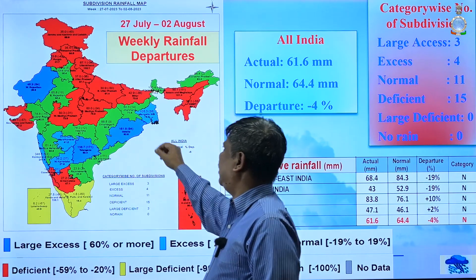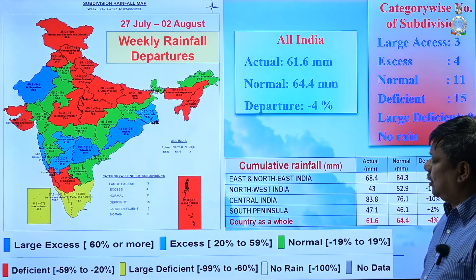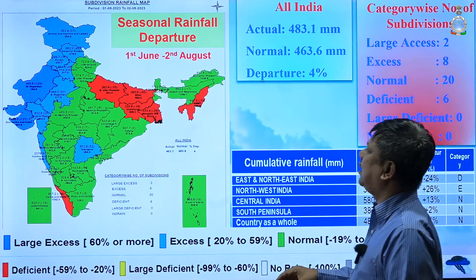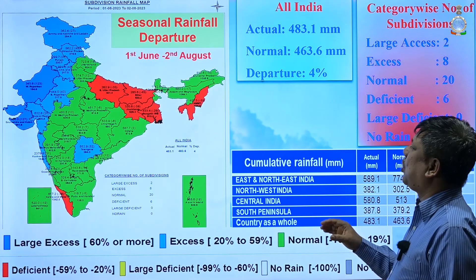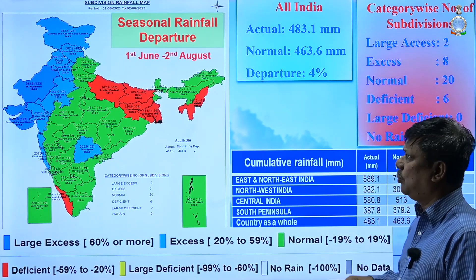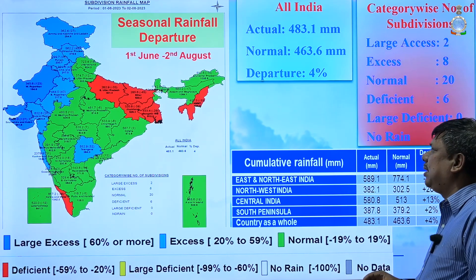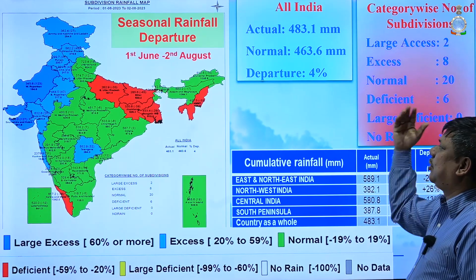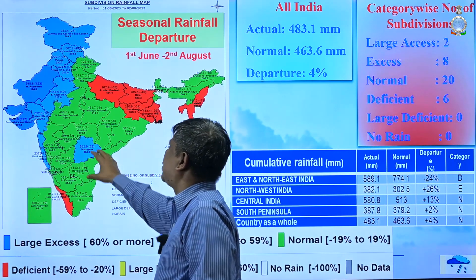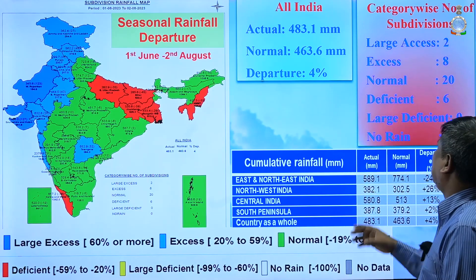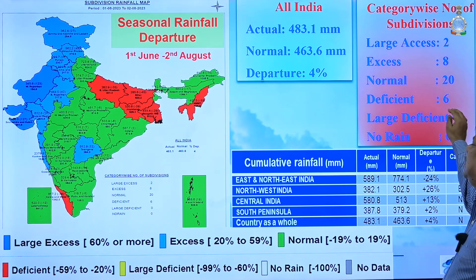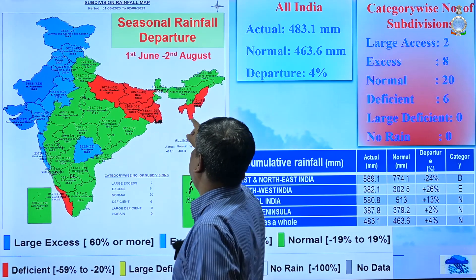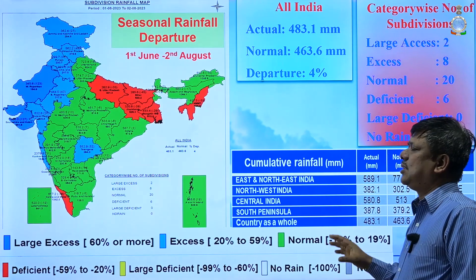Looking at the seasonal departure, it is plus 4 percent all-India. This week was minus 4 percent, so the seasonal total is only about 1 percent less than normal — last week it was plus 5 percent. Most subdivisions show large excess, excess, or normal. Only 6 subdivisions are deficient: Kerala, Uttar Pradesh, Bihar, Jharkhand, Gangetic West Bengal, and Nagaland-Manipur-Tripura.